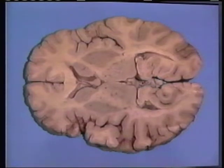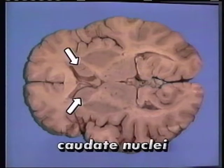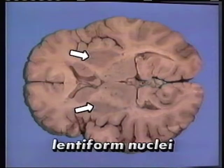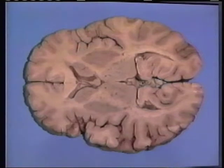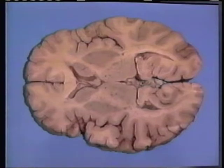The basal nuclei seen in this section include the caudate nucleus and the lentiform nucleus, which is composed of the putamen and globus pallidus. The caudate and lentiform nuclei constitute the corpus striatum.